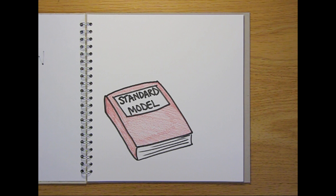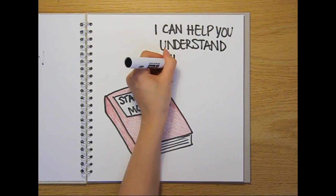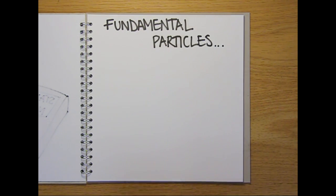First of all, we need to think about something known as the standard model of particle physics. This is a mathematical model that allows us to make sense of how the universe works, and it describes the interactions between all of the different fundamental particles that we know about.